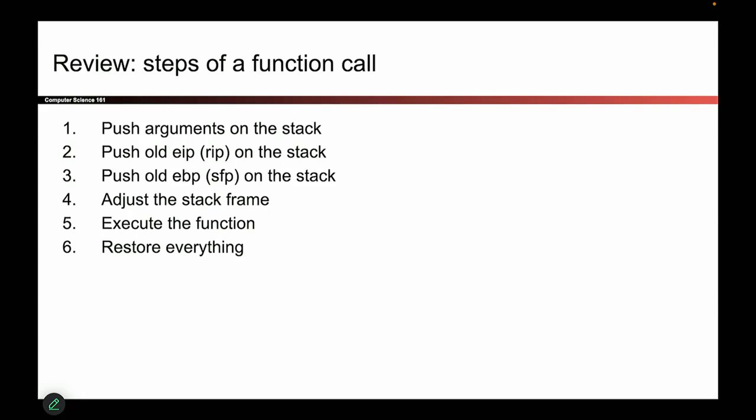Remember that EBP and ESP point at the top and the bottom of our current stack frame. If we're calling a new function, those two registers have to shift down — the addresses in those registers have to decrease so that they now point at the new stack frame. And we also had to change EIP, the instruction pointer, to point at the instructions of the new function.